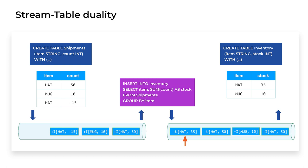What you've seen are the two principal types of streams and tables in Flink SQL: append-only tables and streams, like the shipments table, and updating tables and streams, like the inventory table. When we talk about state later in the course, we'll see that this distinction is important because when Flink executes queries that require updates, the Flink SQL runtime has to keep some internal state to track what's going on. For example, it couldn't know to change the inventory from 50 to 35 without storing the current inventory internally.